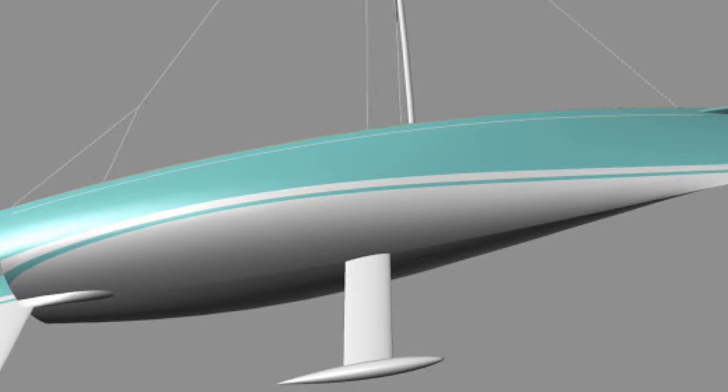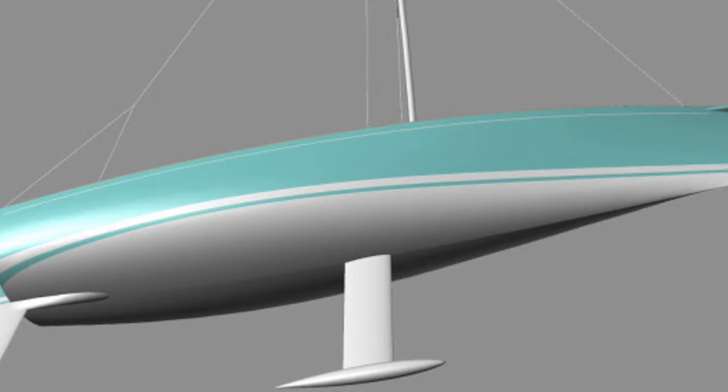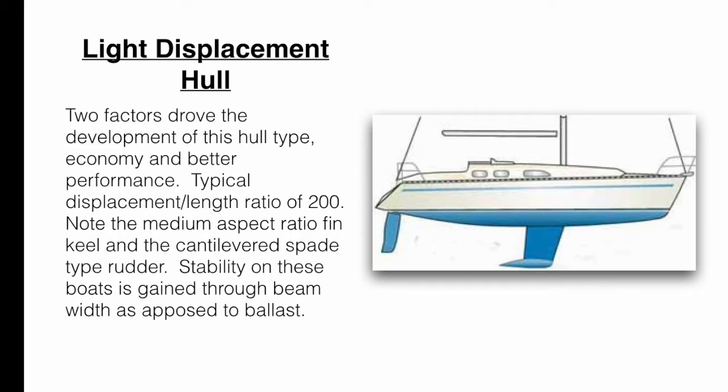The keels on the ultralight displacement hulls will be a high aspect ratio as opposed to medium aspect ratio, and they'll have such length and depth to them that they will indeed prevent anchoring anywhere near the beach. Performance in the right conditions though with the ultralight hull can be actually awesome. These types will readily unstick themselves from the limitations of hull speed and plane like dinghies, and it should come as no surprise that Ted Brewer's comfort ratio isn't high on the list of design considerations for the ultralight displacement hull.